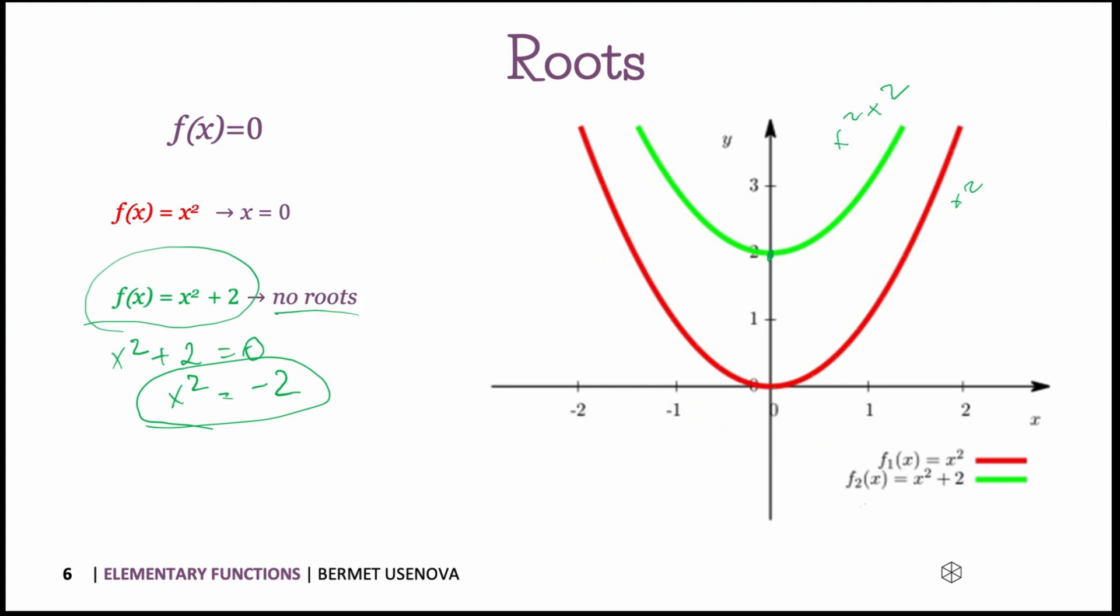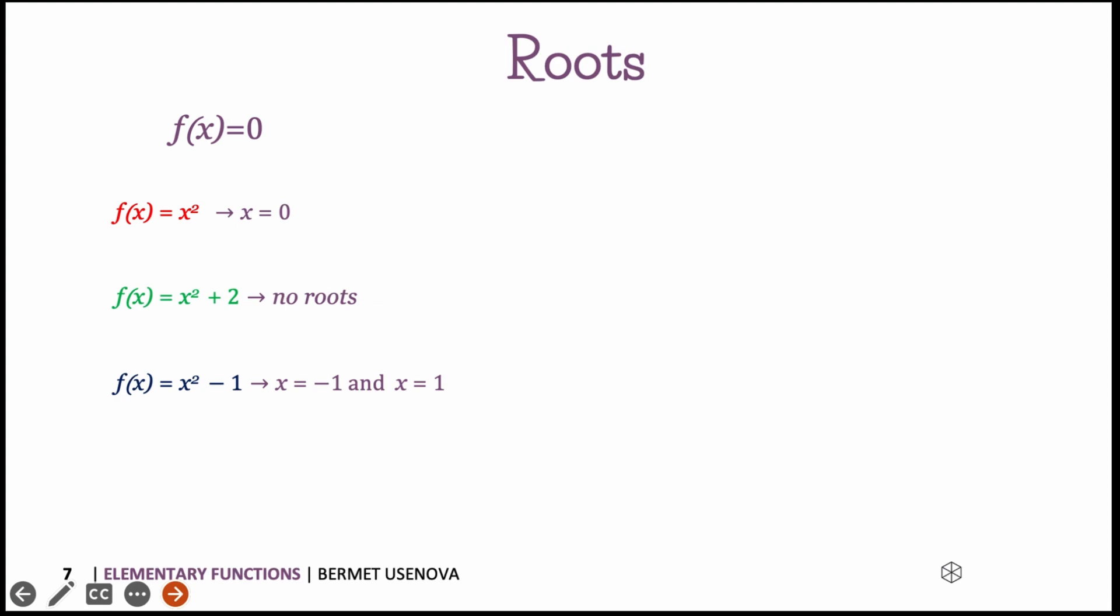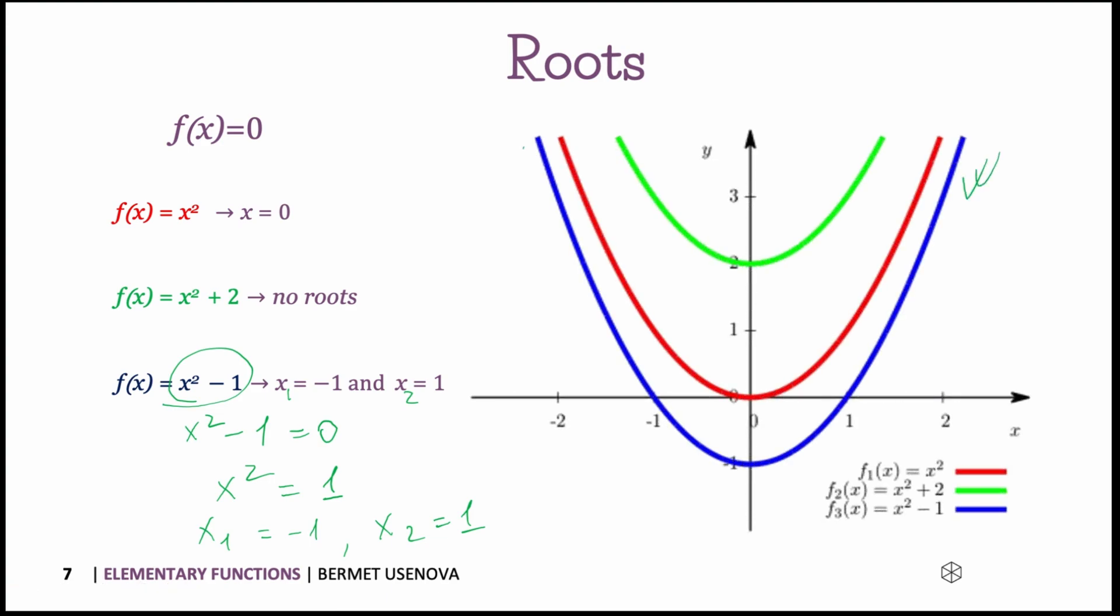The third option is when we have two roots. For example, if we solve this simple equation where x squared minus one equals zero, we will have two roots. x1 will be minus one and x2 will be equal to one. Graphically it looks like this, the blue graph. It will be x squared minus one. So it means that it touches in two points our x-axis.